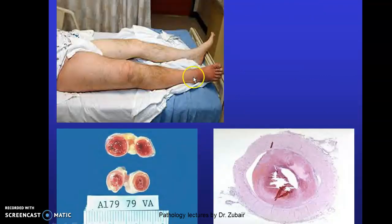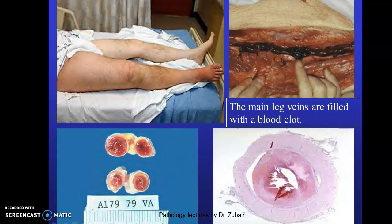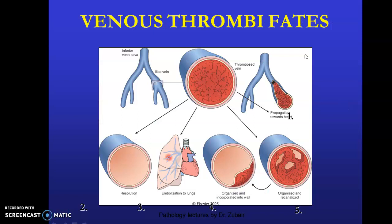This is how you can identify a case of deep vein thrombosis. Compared to the normal limb, the affected limb is definitely enlarged, with swelling and engorged veins, and the patient will be in a very painful condition. Here you can see a thrombus of the coronary arteries — within the vessel wall there is a thrombus which has ruptured. In another image, the main leg veins are filled with blood clots.